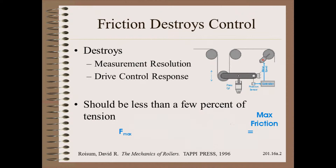So how much friction is allowable? The answer is simple to estimate. You only need to know three things. First, you need to know the minimum tension that the line is to run. Here we are using 10% of a 10 PLI strong web.